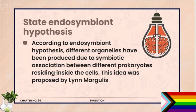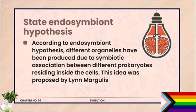Question number 2: State the endosymbiotic hypothesis. According to the endosymbiotic hypothesis, different organelles have been produced due to symbiotic association between different prokaryotes residing inside the cell. The idea was proposed by Lynn Margulis. Matlab ek organism doosre organism ko engulf karta hai, aur uske andar digest hone ki bajaye symbiotic association bana leta hai — isko endosymbiotic hypothesis kehte hain.